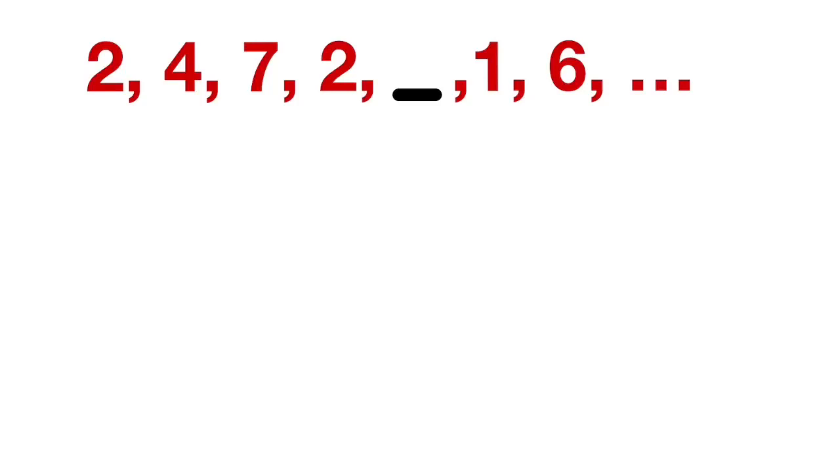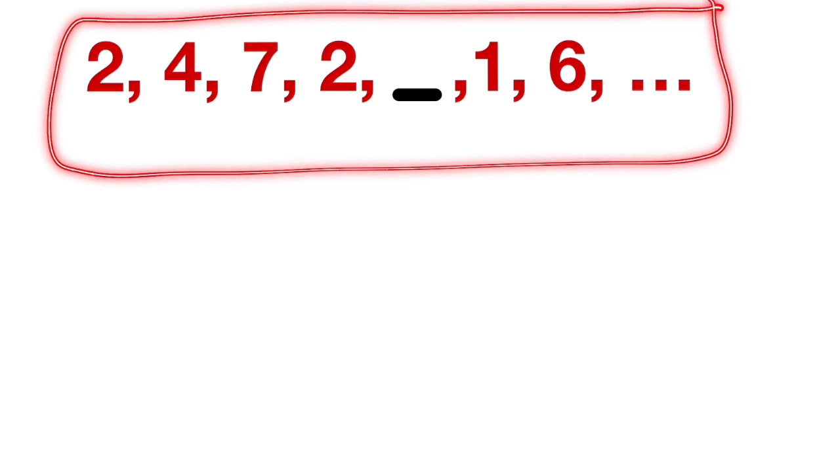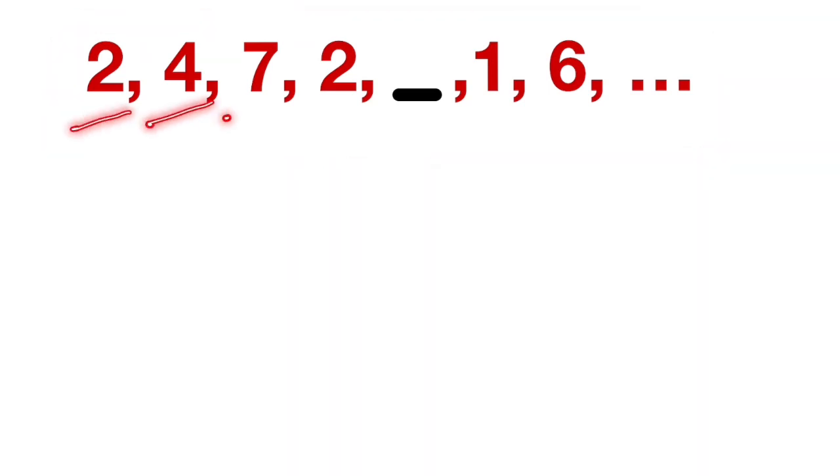Hey everyone, welcome back to another interesting video. Here we have a sequence and the terms are 2, 4, 7, 2, dash, 1, 6, and so on, and we have to find out the missing term in this sequence. In order to find the missing term, we should know the relation between the consecutive terms or we need to know some relation between these numbers.